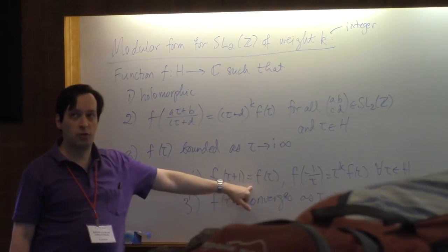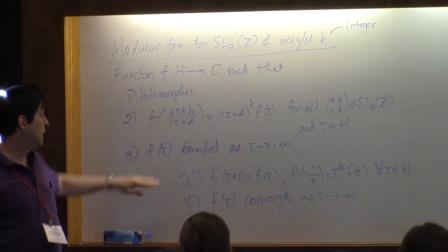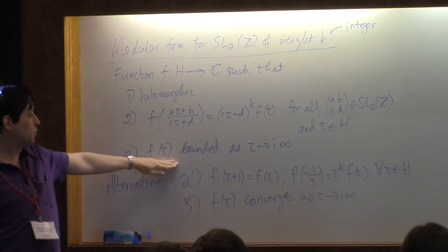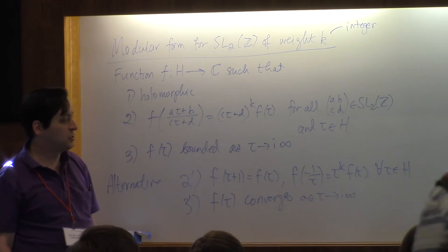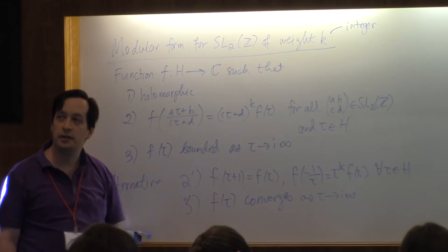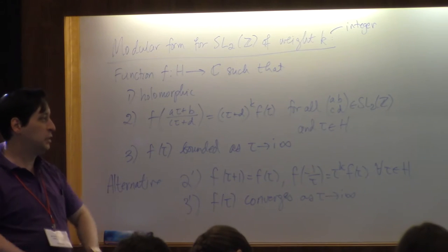This is for the matrix 1, 1, 0, 1. This is for the matrix 0, minus 1, 1, 0. And then we have the condition at infinity going up. The function is bounded, but then by using complex analysis, it turns out to be equivalent to a stronger condition that, in fact, the value has a limit as you approach infinity, not just that it's bounded.